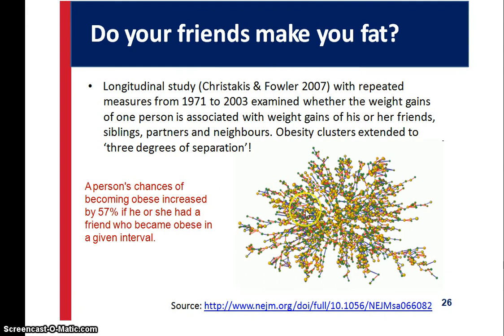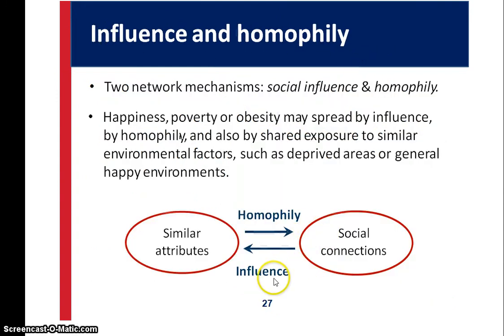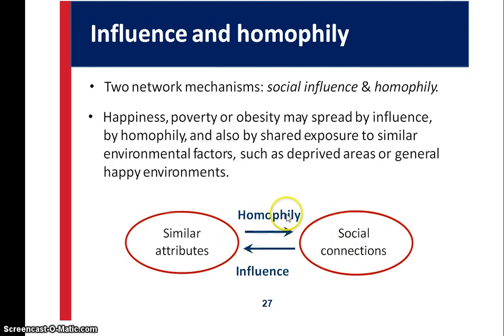Here the nodes are color-coded for different types of things. This is part of social network analysis — we'll discuss homophily and influence, the two main network mechanisms through which influence happens. Happiness, poverty, and obesity may spread through influence, homophily, and shared exposure to similar environmental factors. When you see someone with similar attributes, you form a social connection and are more likely to be influenced by them due to perceived similarity.